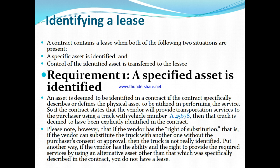For certain traits or assets, they come from life to identify the asset and control the transfer to the asset. An asset is identified in a contract if the contract specifically describes or defines the physical asset to be utilized in performing the service. So if the contract states that the vendor will provide transportation service to the purchaser using a truck with a specific vehicle number, then that truck is deemed to have been explicitly identified in the contract.